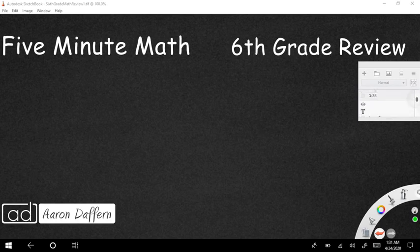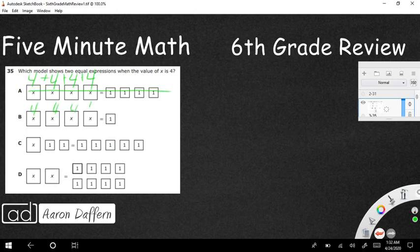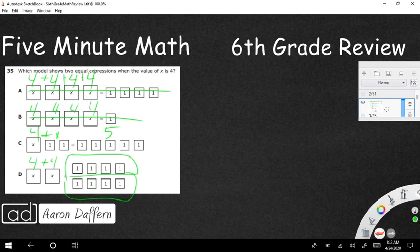And then finally, this evening, we are looking at this. Which model shows two equal expressions, these are algebra tiles, when the value of x is 4? Well, let's just start plugging in 4s right here. And what we're doing here is we're just adding these. So 4 plus 4 plus 4 plus 4, 16 does not equal 4. 4 plus 4 plus 4 plus 4, 16 does not equal 1. I've got a 4 plus 1 plus 1. So that's going to be 6. Very close. This is 5 over here. And we've got a 4 plus 4. Look at that. We've got a set of 4, a set of 4. That makes 8. So D is going to be our answer. Pretty simple this evening.